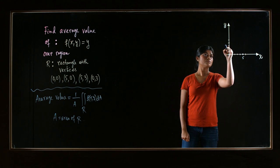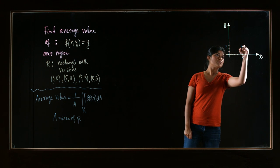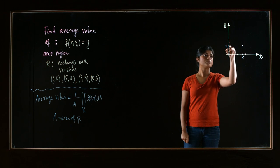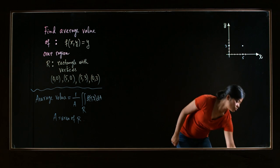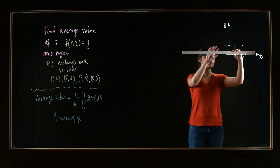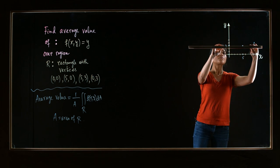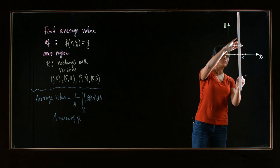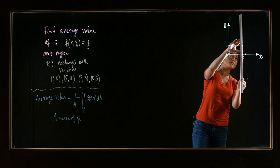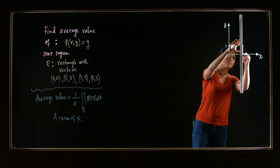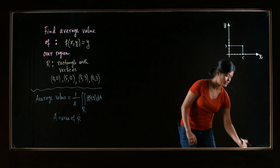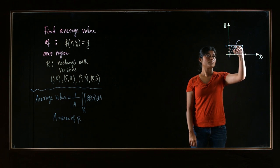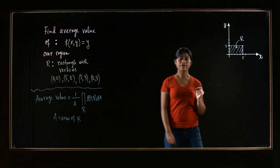And then 5, 3, so this is 3, 5, 3, and then 0, 3. Okay, so if you join these four points, you get a rectangle. All right, so this is our region R.